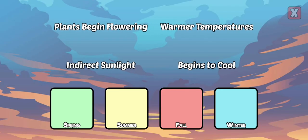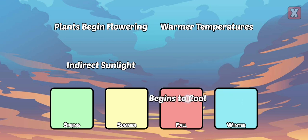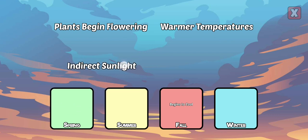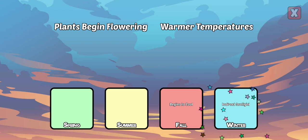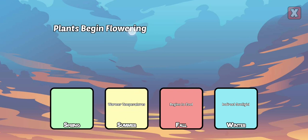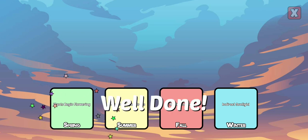Drag each description to the correct season. Begins to cool. Indirect sunlight. Warmer temperatures. Plants begin flowering. Well done!